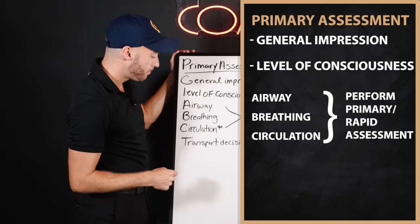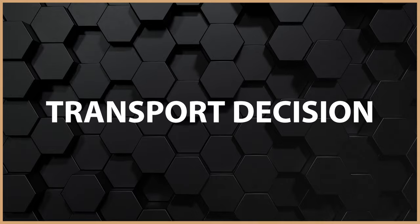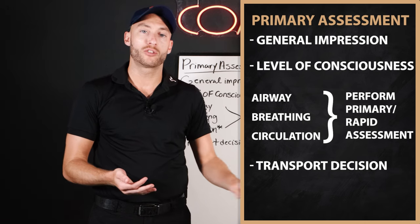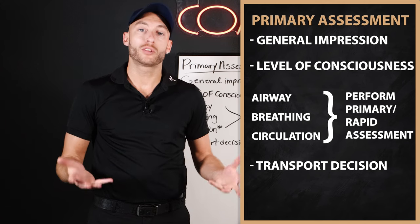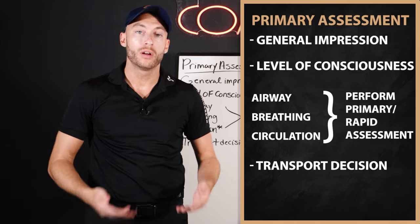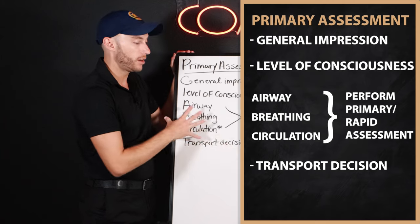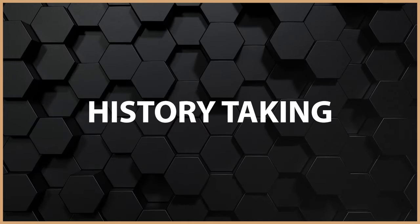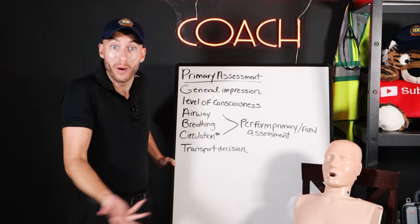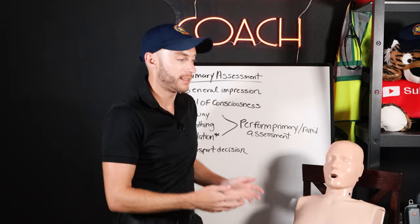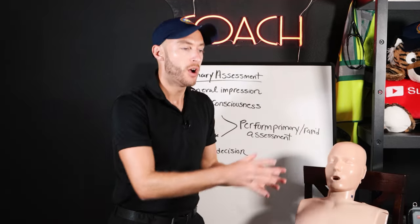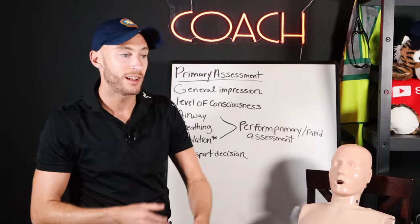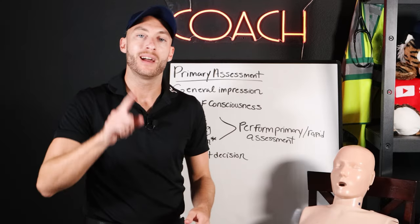Once we've done that, we make a transport decision. How critical is our patient? Are we going lights and sirens to the hospital? Does this patient need to be flown out? Where are we with this patient? This is all done when we first assess the patient. When making the transport decision, the next step is history taking. We get a patient history if they're awake — this can be done while moving the patient to the stretcher or getting them out of an austere environment. We can also talk to bystanders and family if the patient can't provide history.